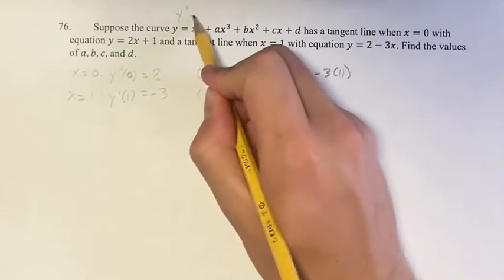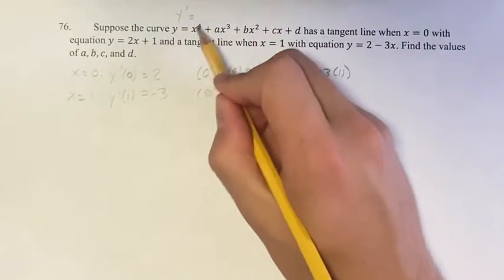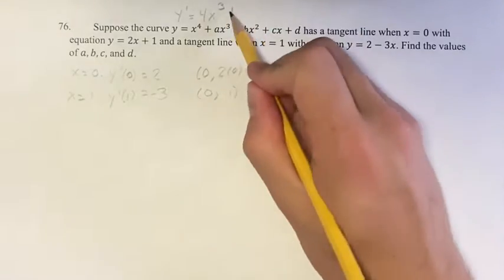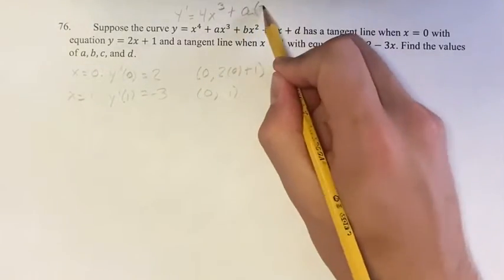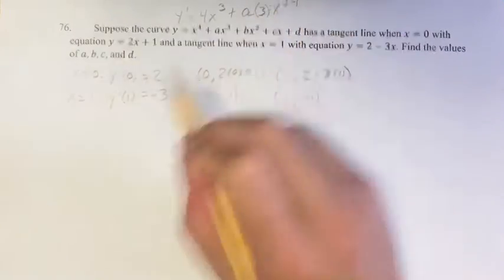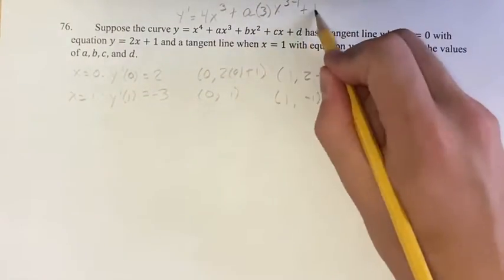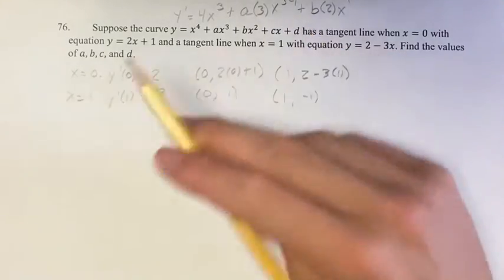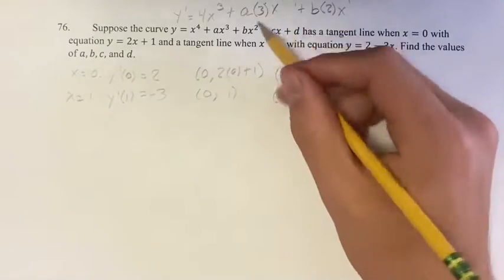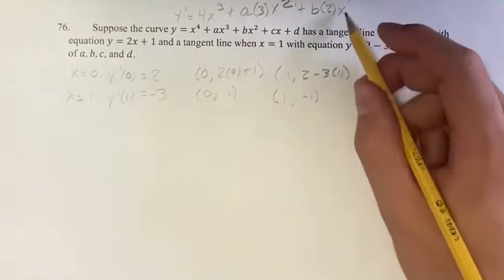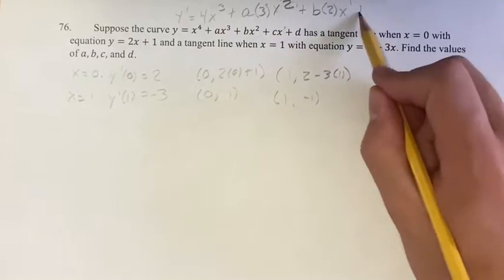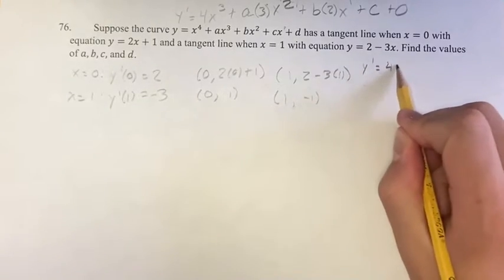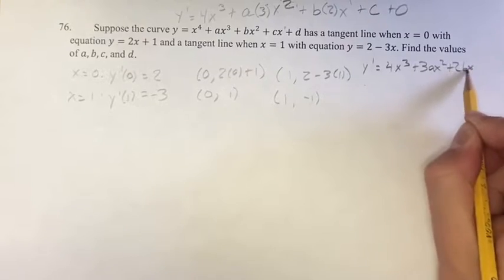First, we have to compute our derivative. The derivative of x to the fourth — we have a power function, so you bring down the exponent; the new exponent is the old one minus 1, so 4 minus 1 is 3. Then for each subsequent term, bring down the exponent and reduce it by 1. So our derivative is 4x cubed plus 3ax squared plus 2bx plus c.